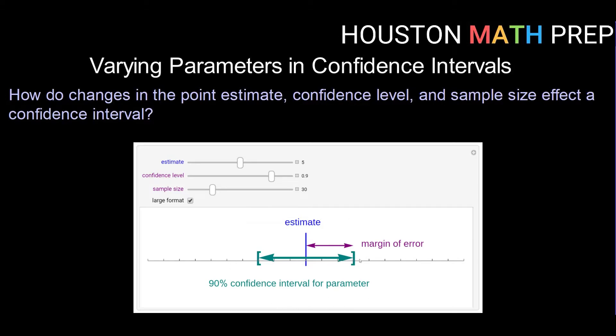So here we have kind of a graphical picture of our confidence interval. We have our center here at our point estimate, and then we have our margin of error reaching down to the left and up to the right. So first thing that I want to change is our confidence level. Currently this is set at a 90% confidence level.